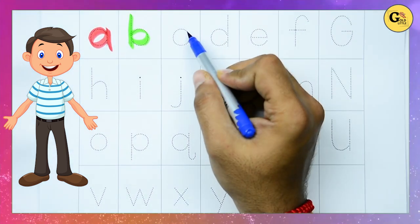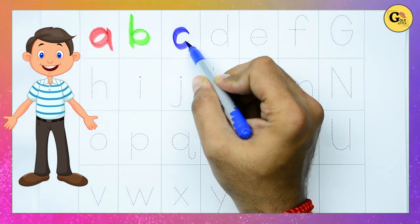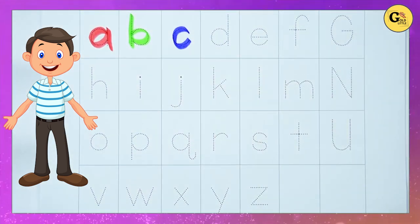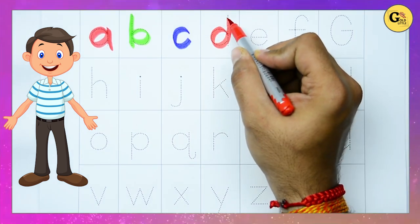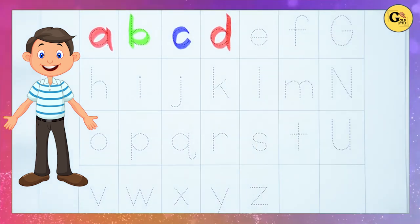Now we write c. Yes, it's c. Blue color c. Red color d. Yes, it's red color d.